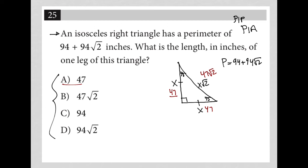While 47 plus 47 is, in fact, 94, this is just 47 root 2, right? Again, perimeter comes by adding up all the sides. So, when I add up all these sides, 47 plus 47, I get 94.